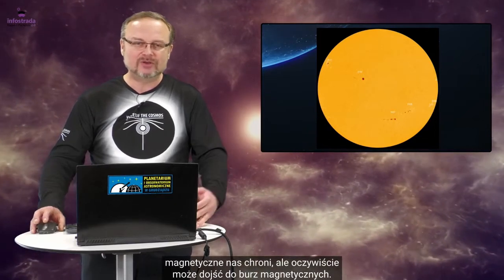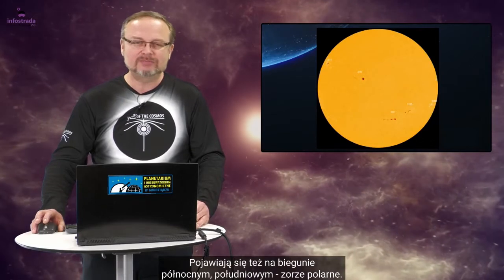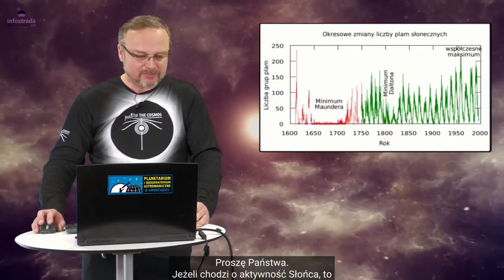Ale oczywiście może dojść do burz magnetycznych. Pojawiają się też na biegunie północnym, południowym zorze polarne.